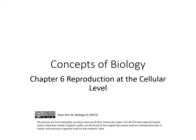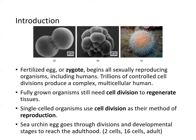Today we'll be going over chapter six: reproduction at the cellular level. The fertilized egg, called the zygote, begins all sexually reproducing organisms, including humans.